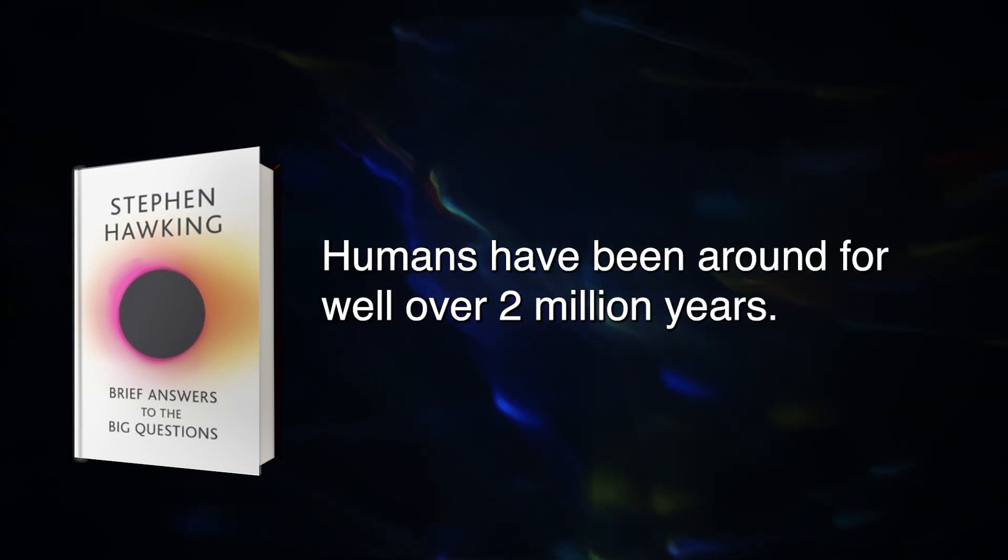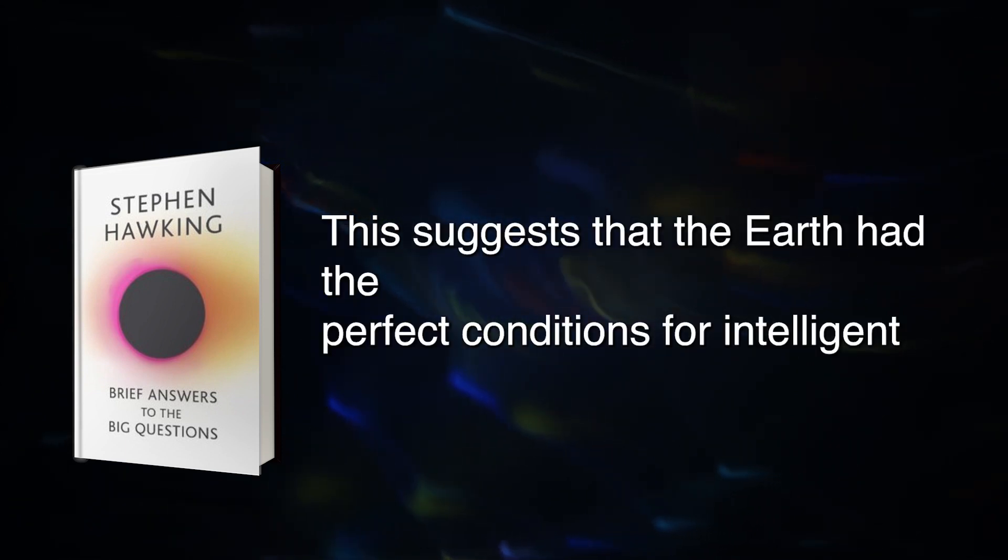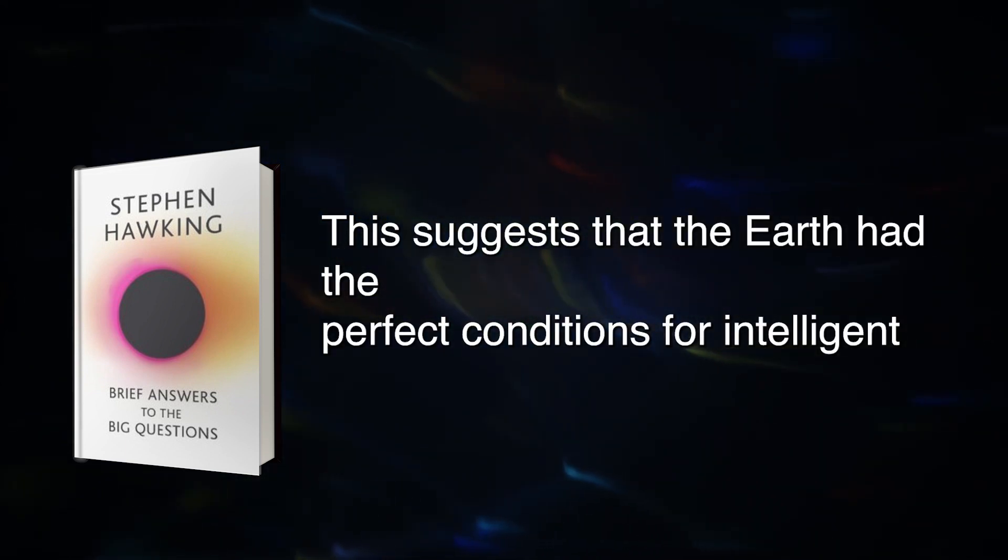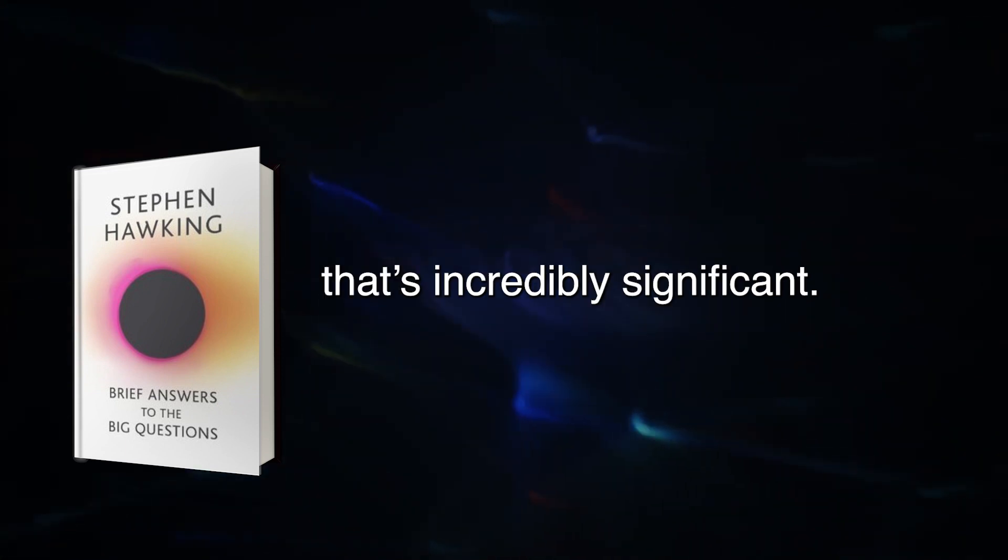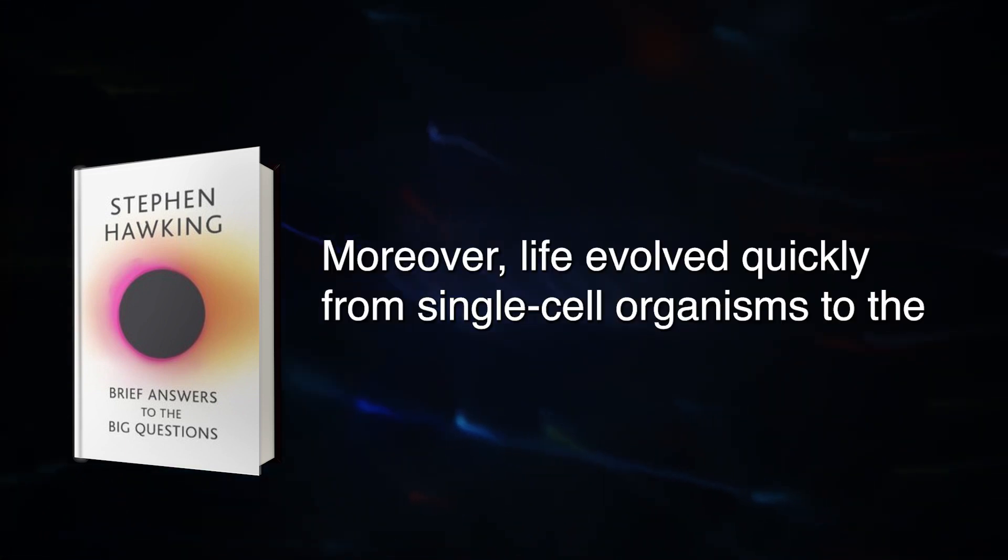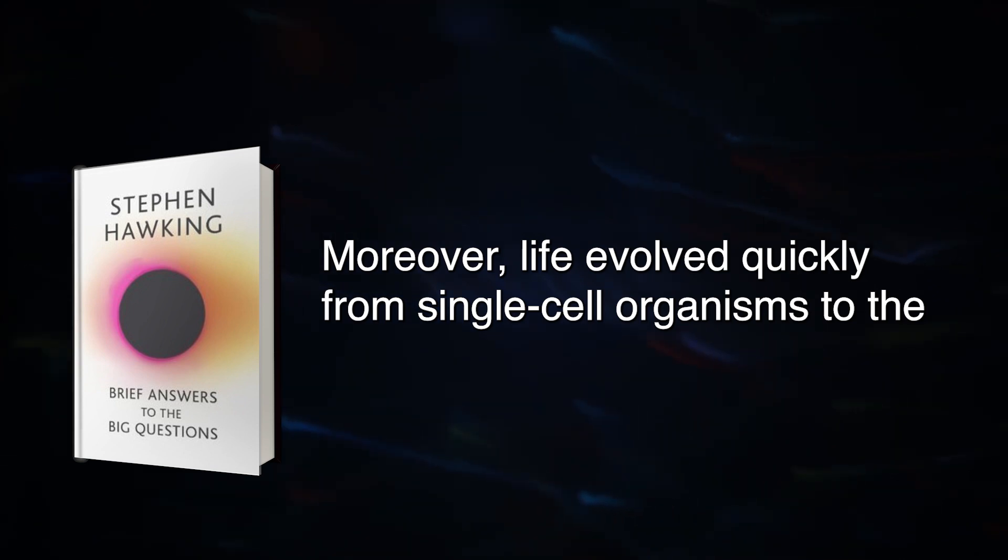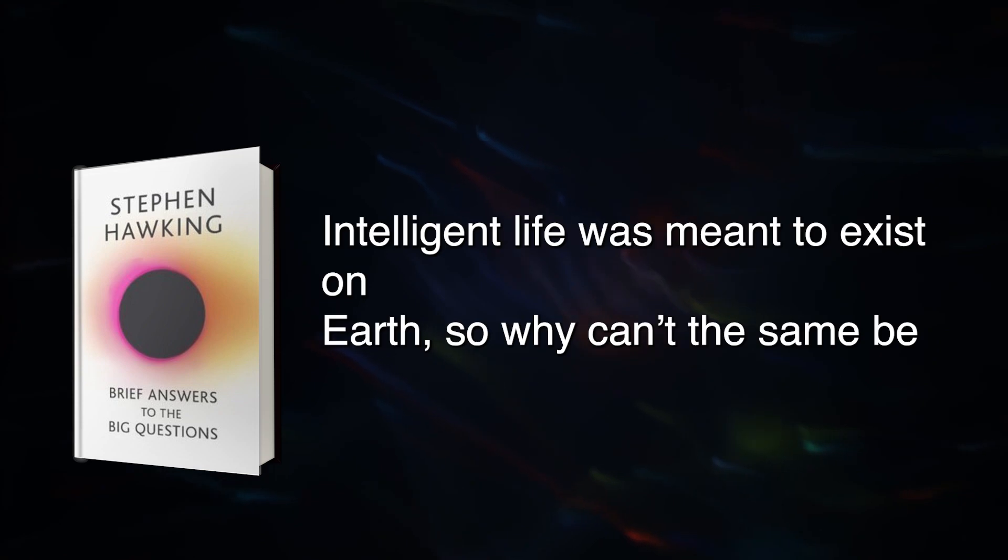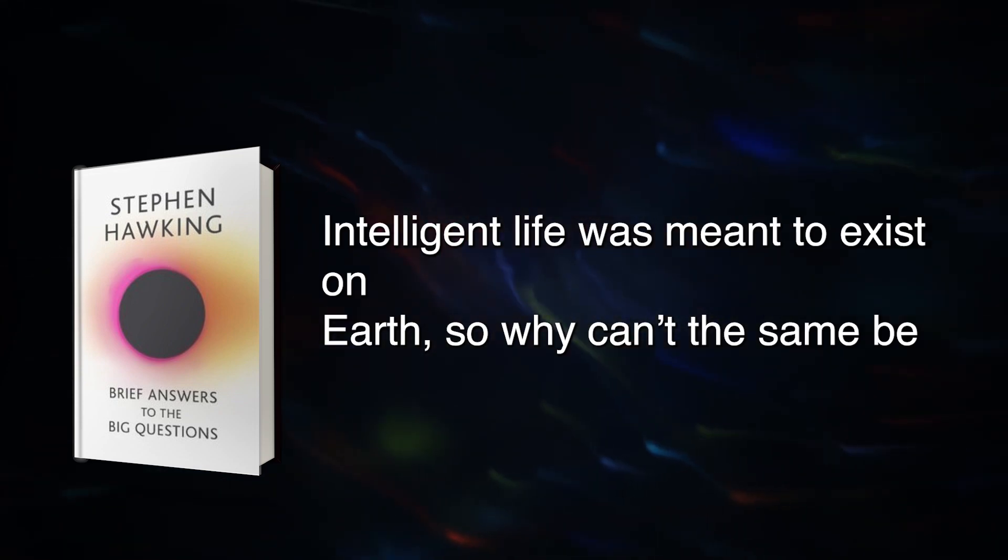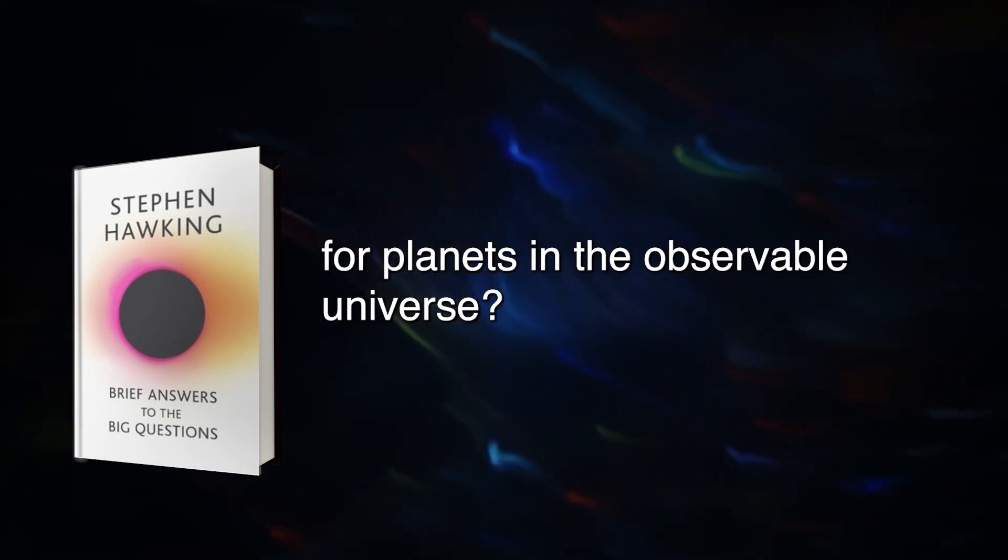Humans have been around for well over two million years. This suggests that the Earth had the perfect conditions for intelligent life to develop and thrive. Given all the fluctuations and possibilities of the universe, that's incredibly significant. Moreover, life evolved quickly from single-cell organisms to the first mammals, as each stage in evolution was quicker than the last. Intelligent life was meant to exist on Earth, so why can't the same be said for planets in the observable universe?